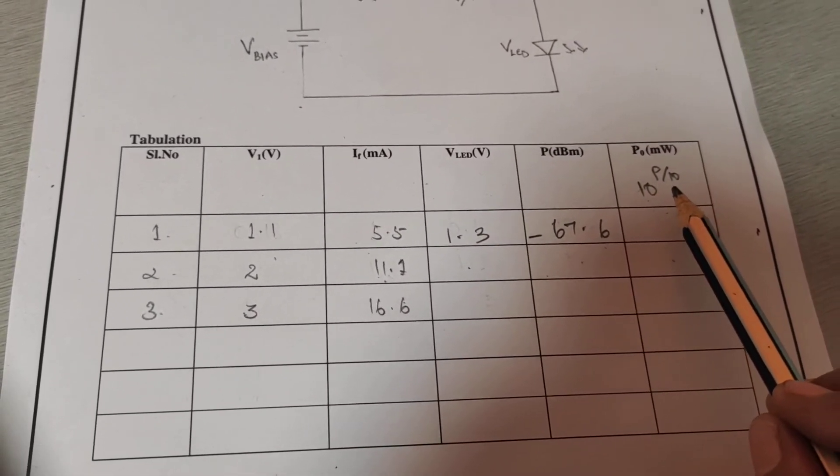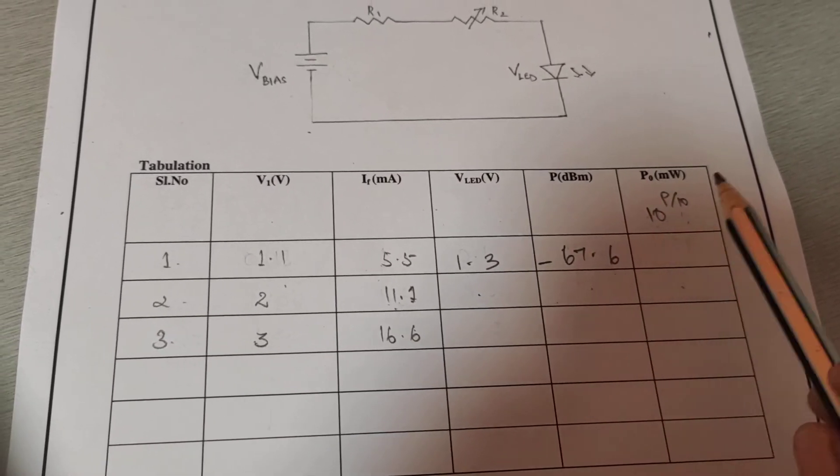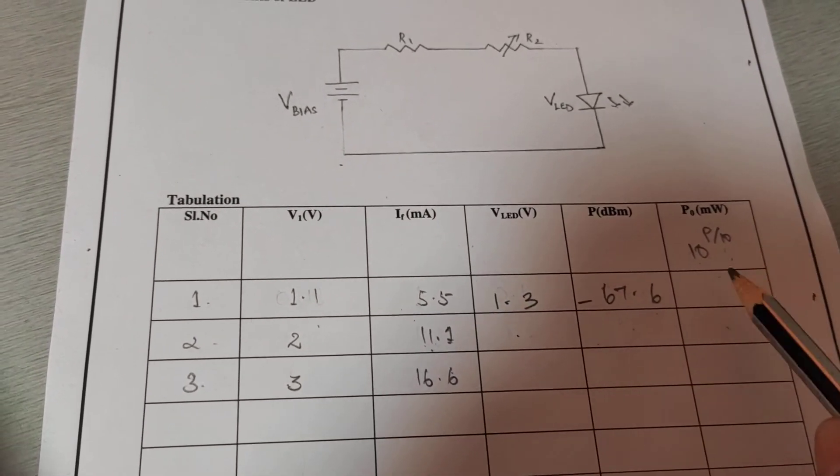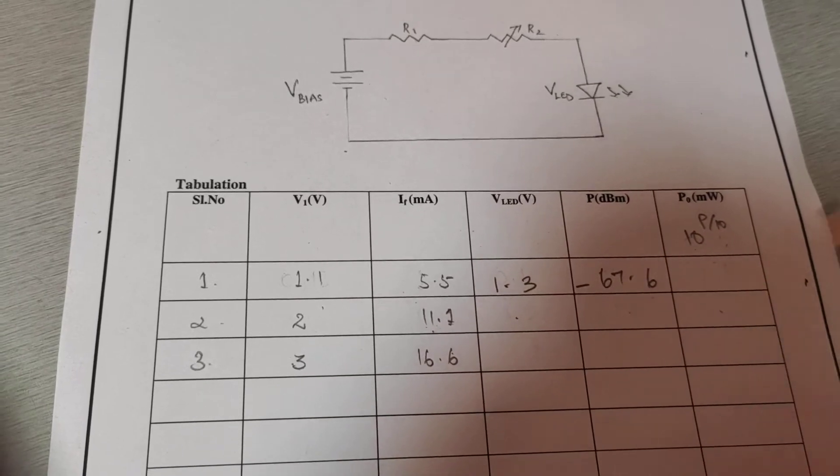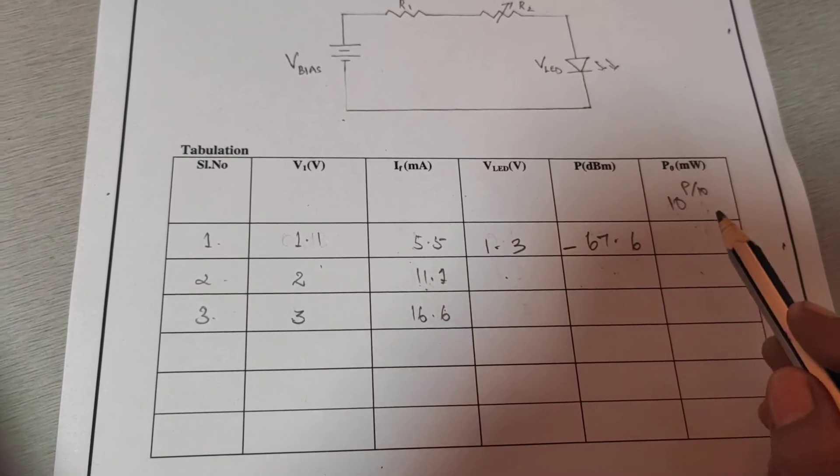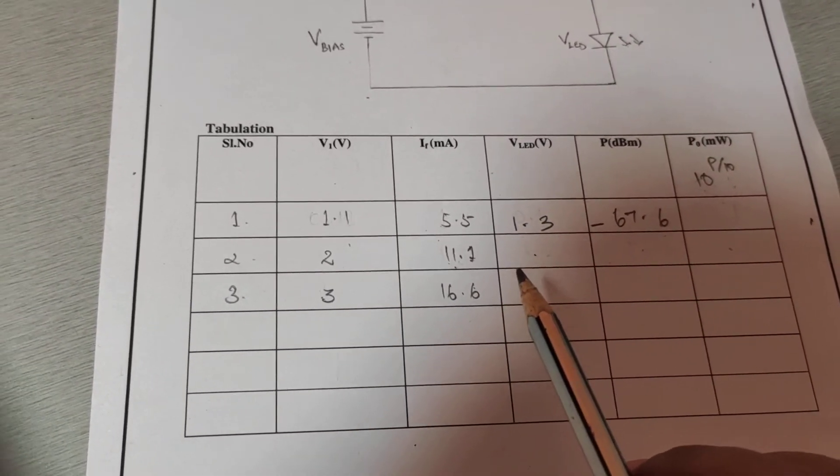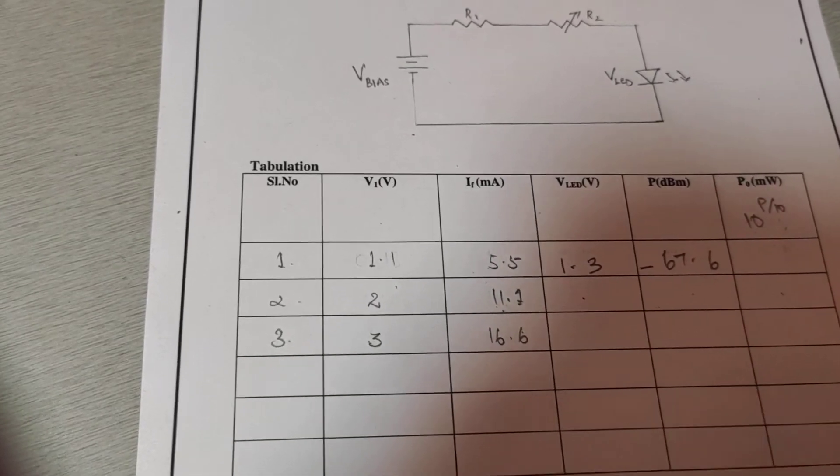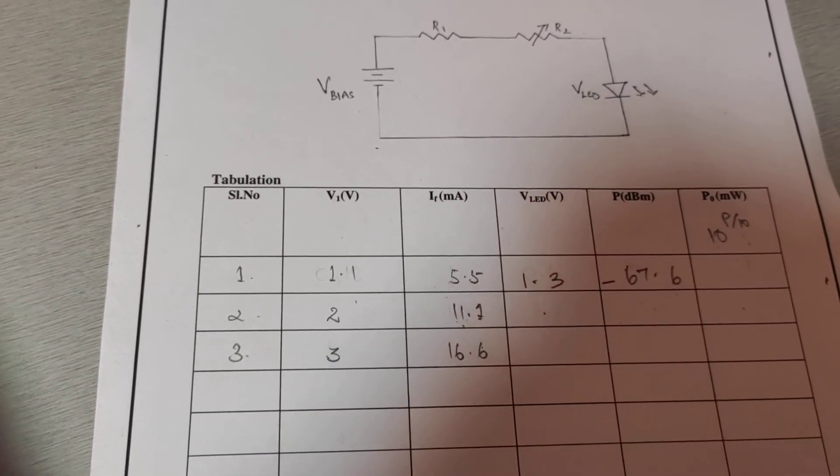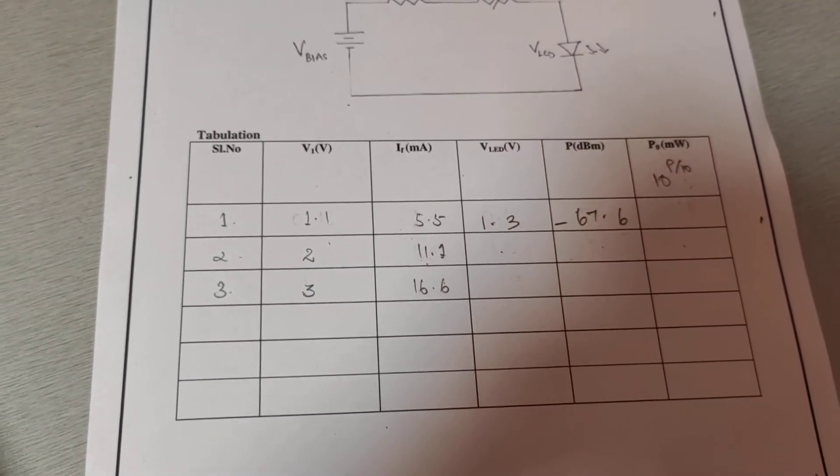With the help of this calculated formula, the numerical expression 10 to the power P divided by 10, I convert the power into milliwatts. In this way, we do the experiment.